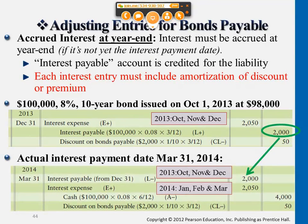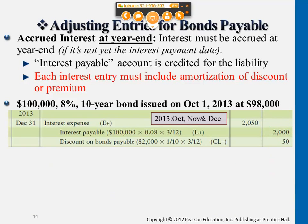Assuming that we issued a bond October 1st — what happens is when it reaches December 31st, we want to recognize interest expense for just three months. Because we issued it in October, so we have all of October, November, and December.